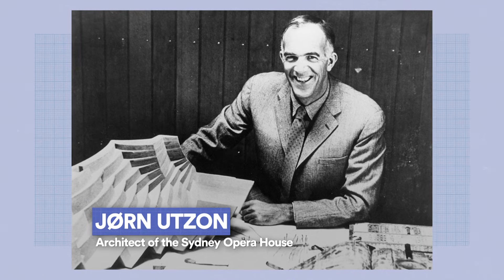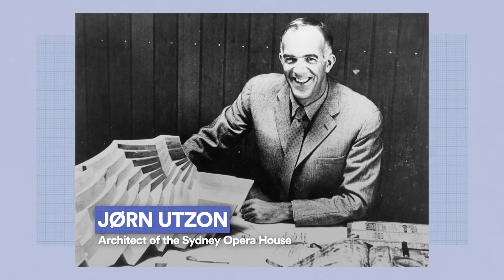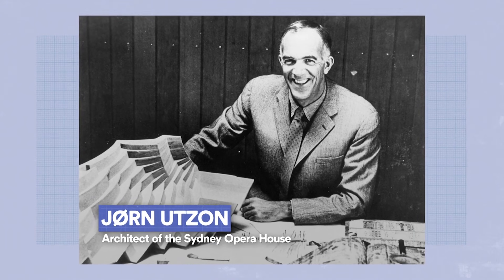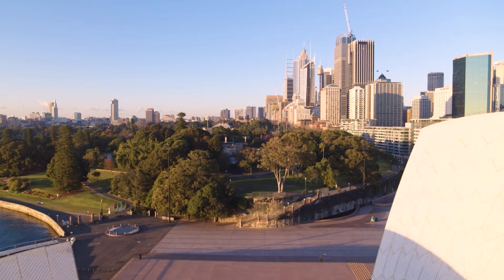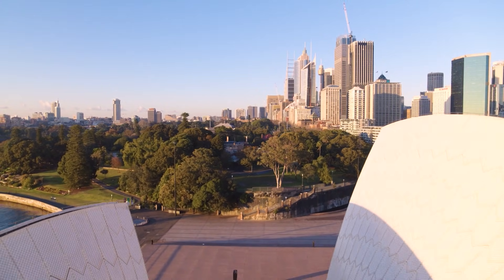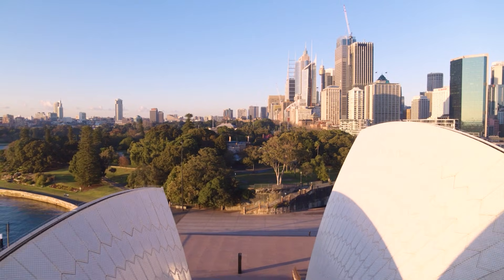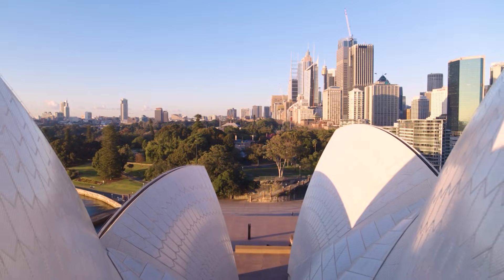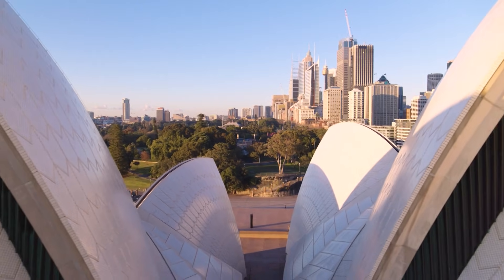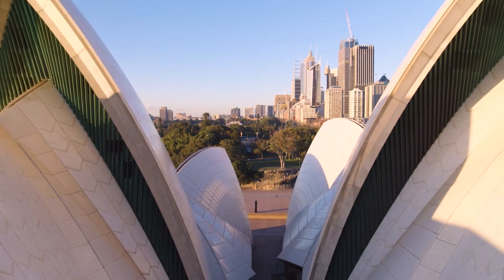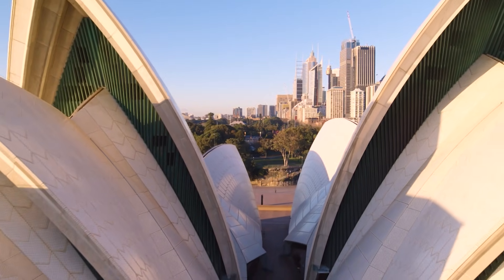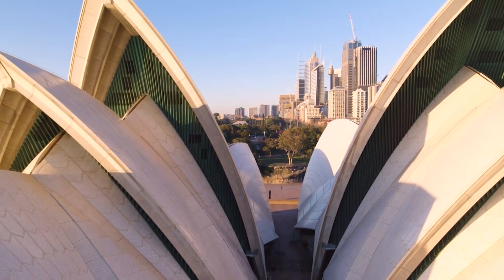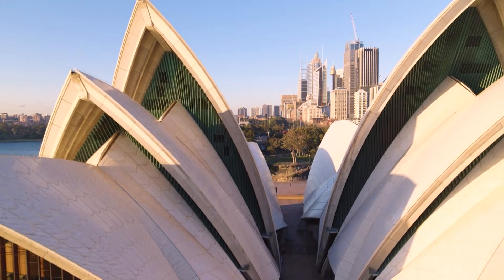The tiles had to be manufactured in Sweden and then brought over by ship. The architect couldn't afford to vastly overestimate the number of tiles or the project cost would skyrocket. But on the other hand, it would be dangerous to underestimate — if he ran out, it would be months before new tiles could be made and shipped over. He needed to be precise in calculating how many tiles would be needed. To do this, he used one of my favourite pieces of mathematics: algebra.